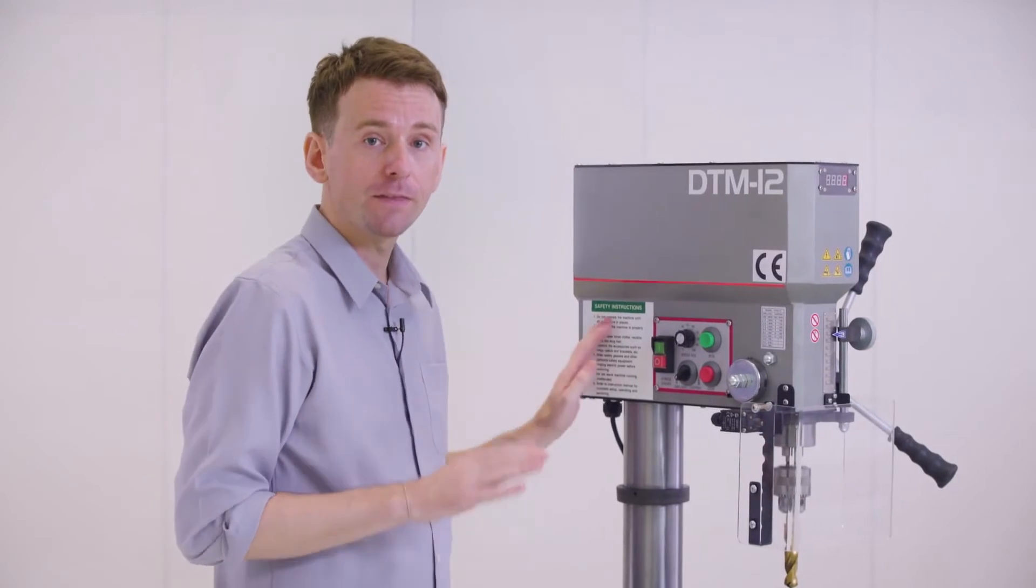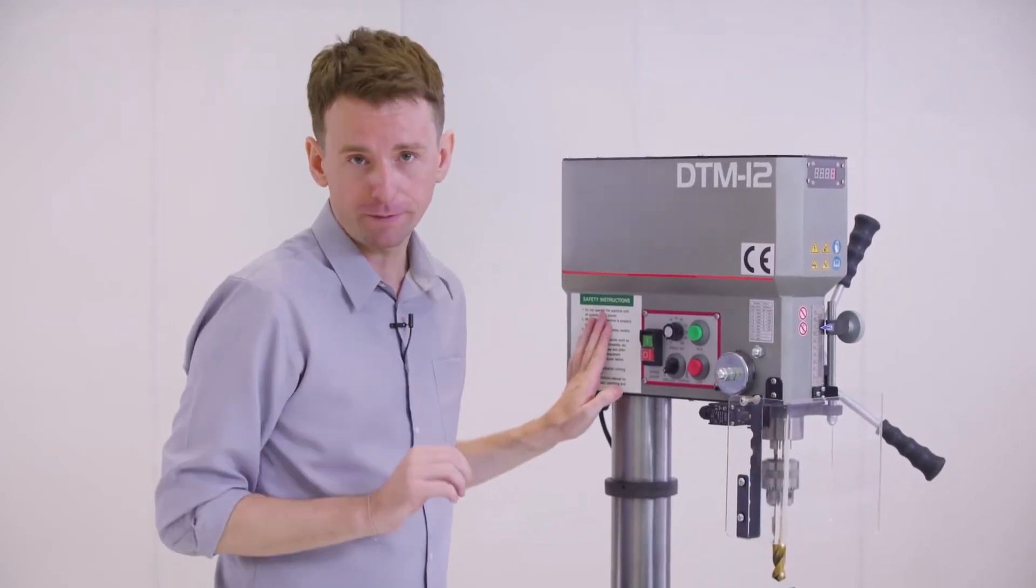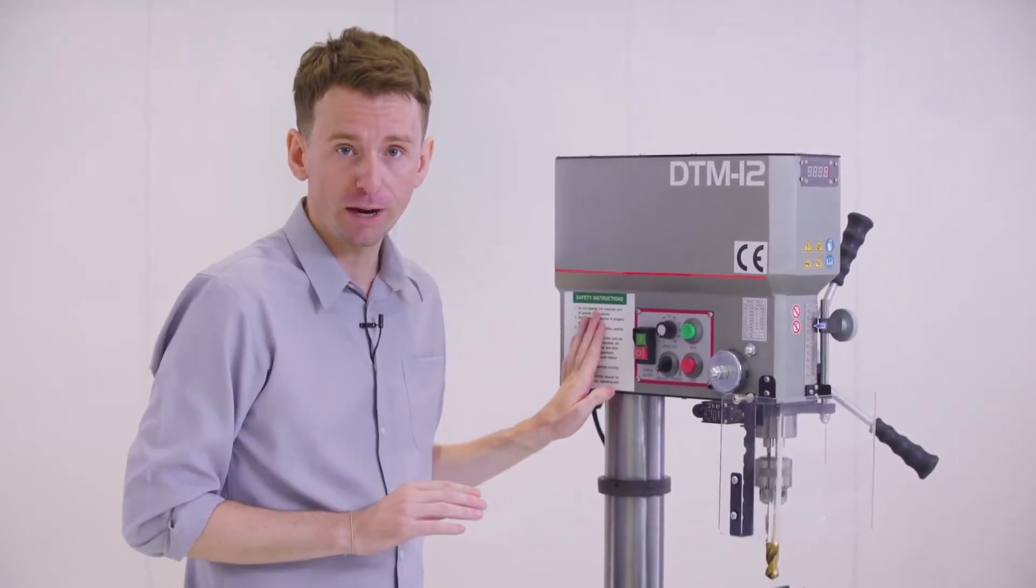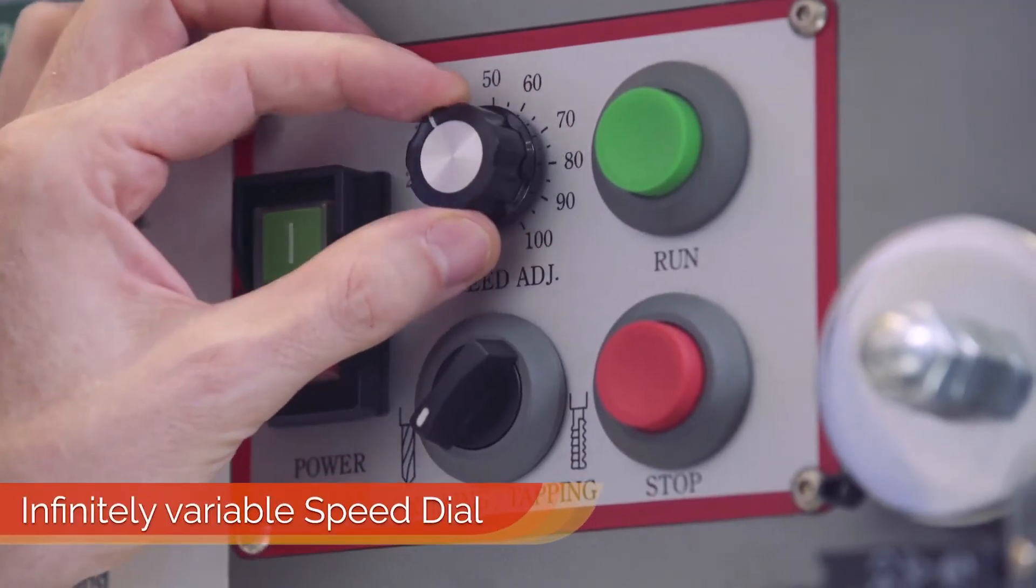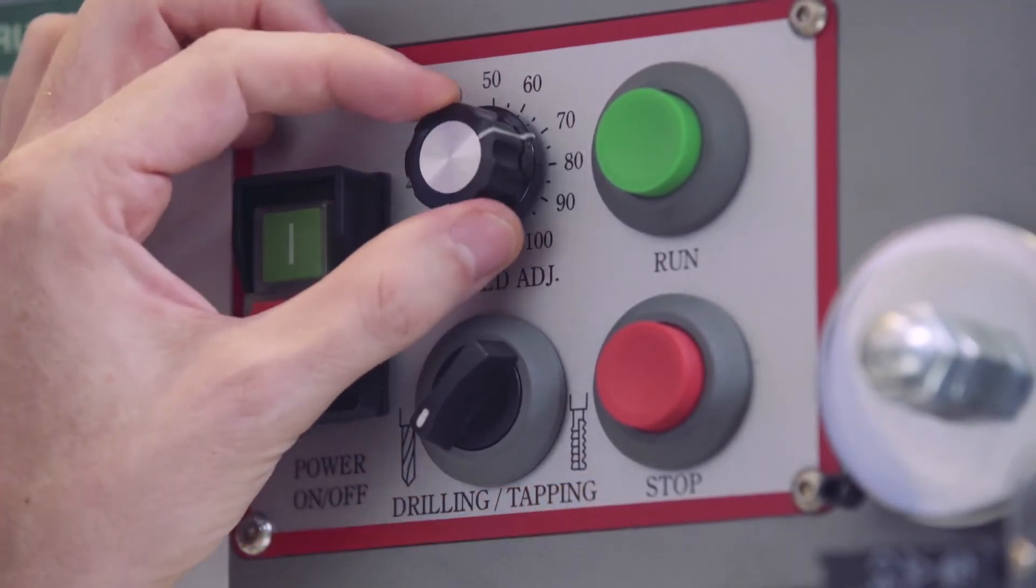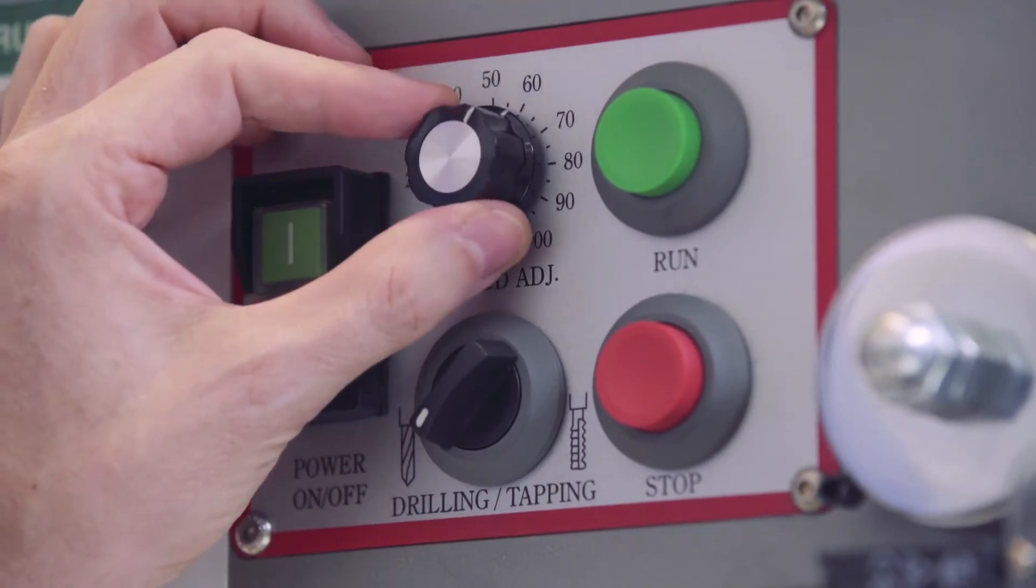Now let's take a quick look at the controls. We've got everything that's needed for smooth operation. Here we have an infinitely variable speed dial that lets you go all the way from 100 up to 1800 RPM.